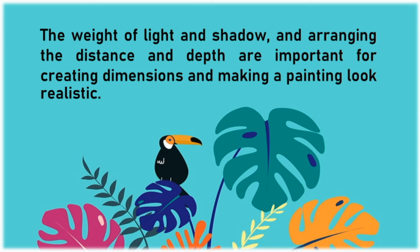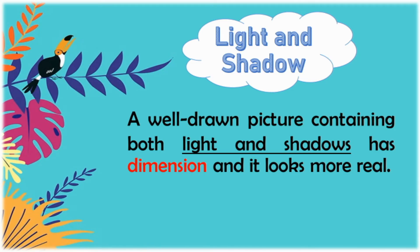The weight of light and shadow and arranging the distance and depth are important for creating dimensions and making a painting look realistic. A well-drawn picture containing both light and shadows has dimension and it looks more real.